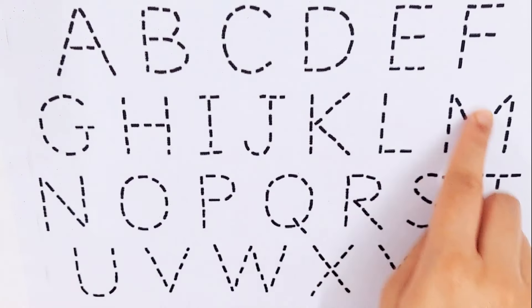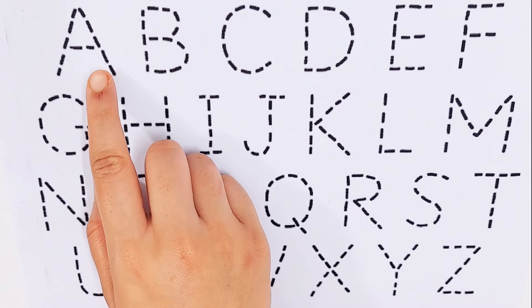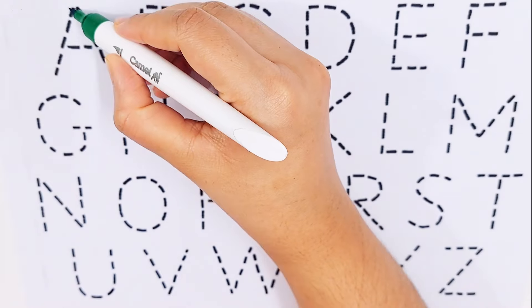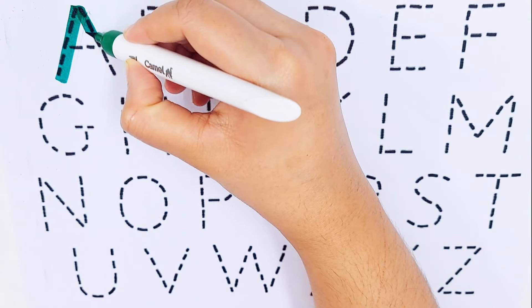Today we'll try to learn some alphabets. A B C D E F. A, A for arrow.